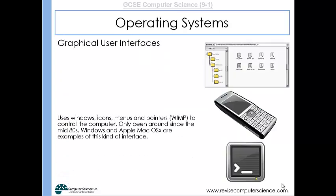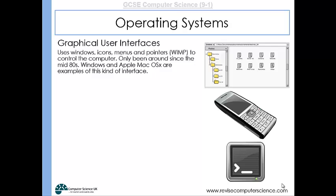A graphical user interface is the sort you would find on a Windows machine or a Mac. It uses icons, menus, pointers, and windows — that's the acronym WIMP — to control the computer. It's been around for a good few decades, since the mid-eighties or so. Windows and Macs are examples.